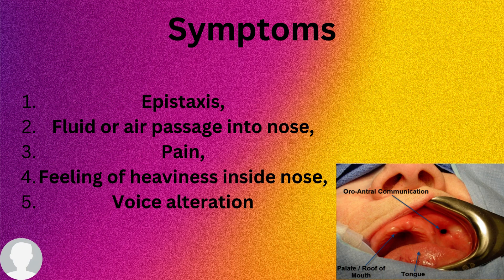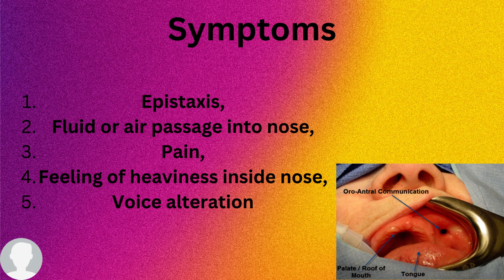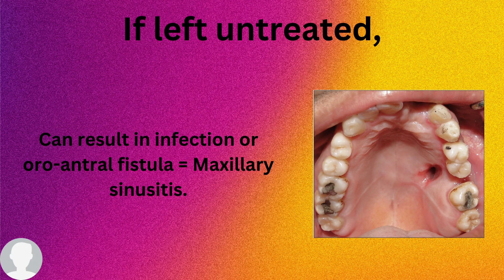Now, what are the symptoms the patient might experience with oral-antral communication? Number one is epistaxis, which is nosebleeding, because there is a direct connection between the nose and the mouth. Number two is fluid or air passage into the nose. Since the nose and mouth are now connected, whenever the patient breathes, there is a hole inside the mouth leading directly to the nose. Number three is a feeling of heaviness inside the nose. Number four is voice alteration — the patient's voice will change.